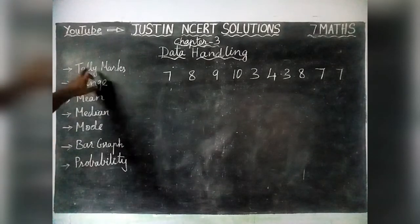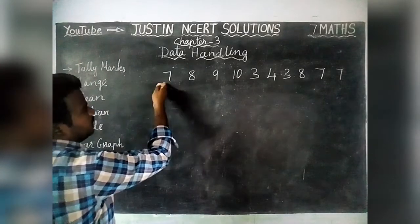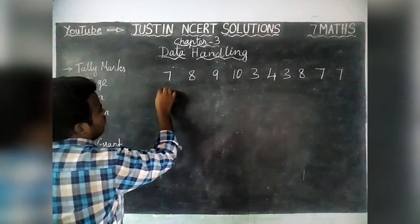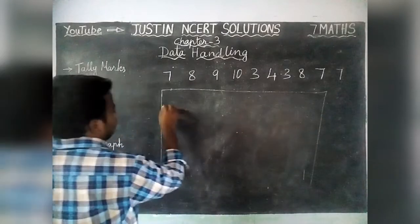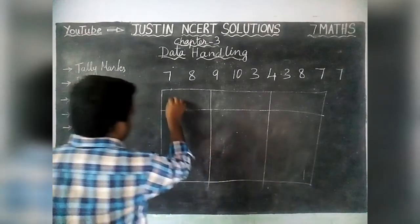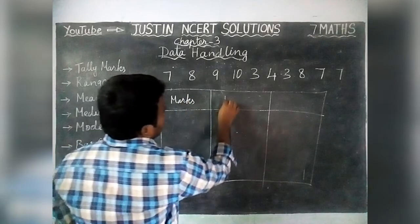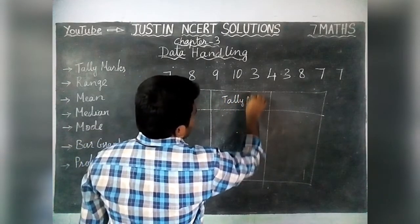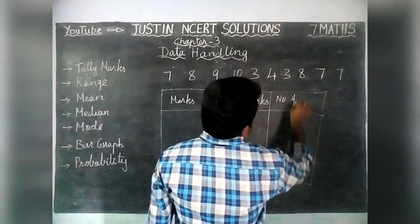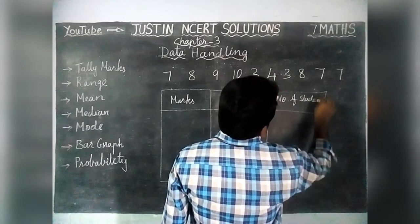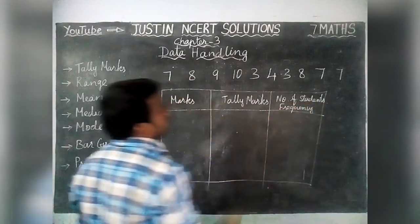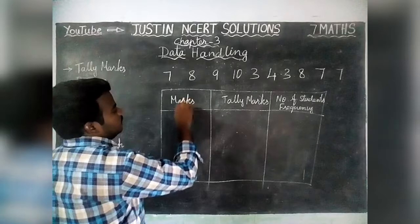Now we are going to see the first topic: tally marks. Here we have taken maths marks of 10 students. Now we are going to write it in tally marks. The table columns are: marks scored, tally marks, and number of students — which can also be called frequency.